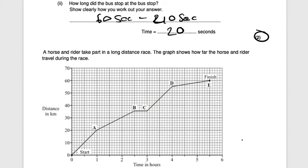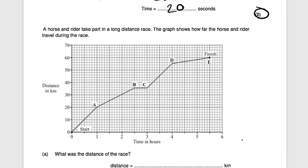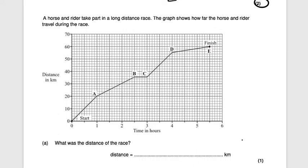Next question: a horse and rider take part in a long distance race. The graph shows how far they travel during the race. What was the total distance of the race? Drawing a horizontal line to the y-axis gives 60 kilometers — one mark.